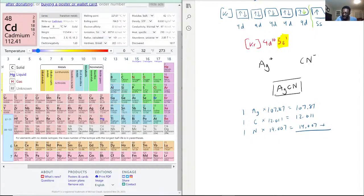You will definitely thank me later because you will realize that sometimes when you're missing a part of a problem it's better we have everything laid out so that we can find it quicker. 107.87 plus 12.01 plus 14.007 equals 133.888. So silver cyanide has a molar mass of 133.888 grams per mole.